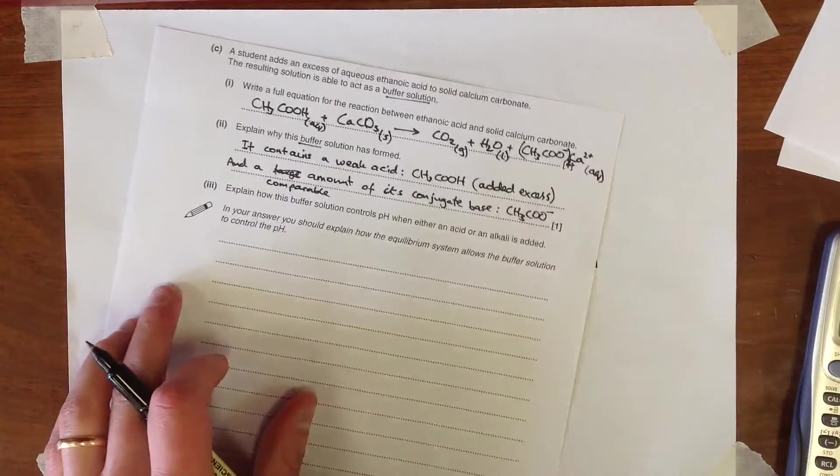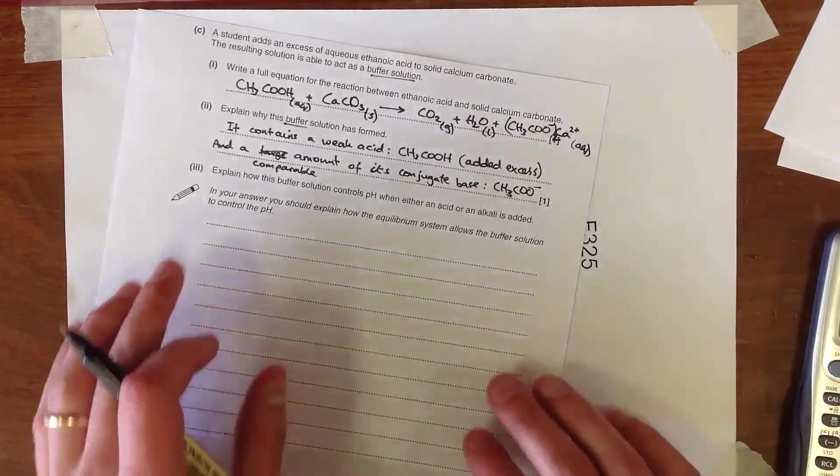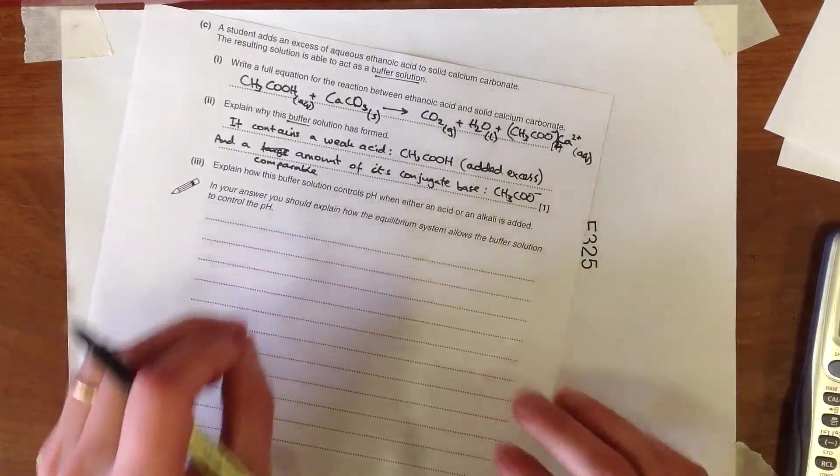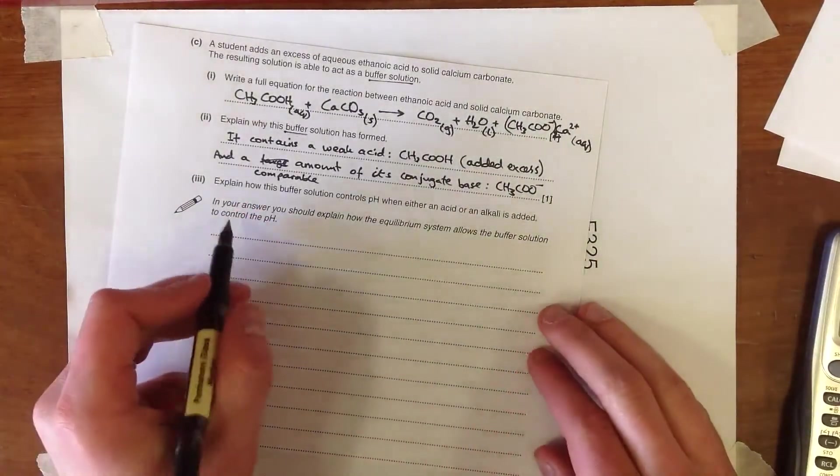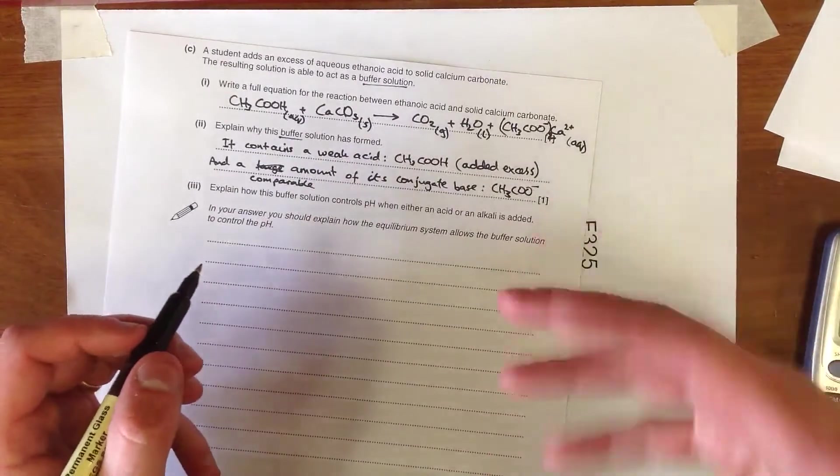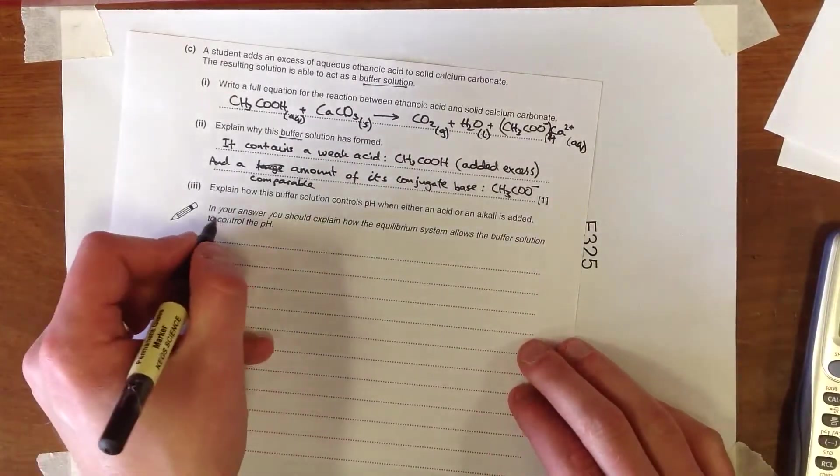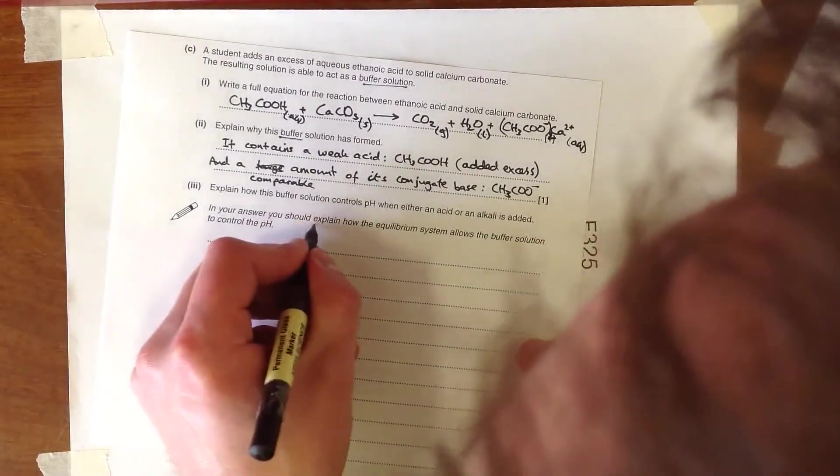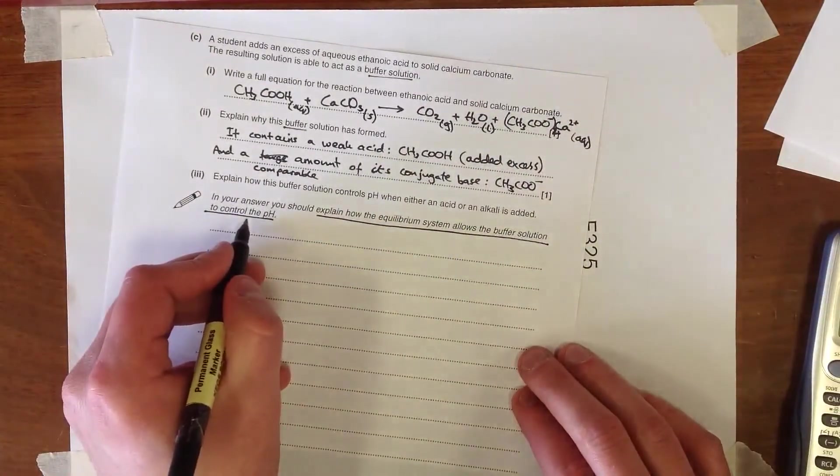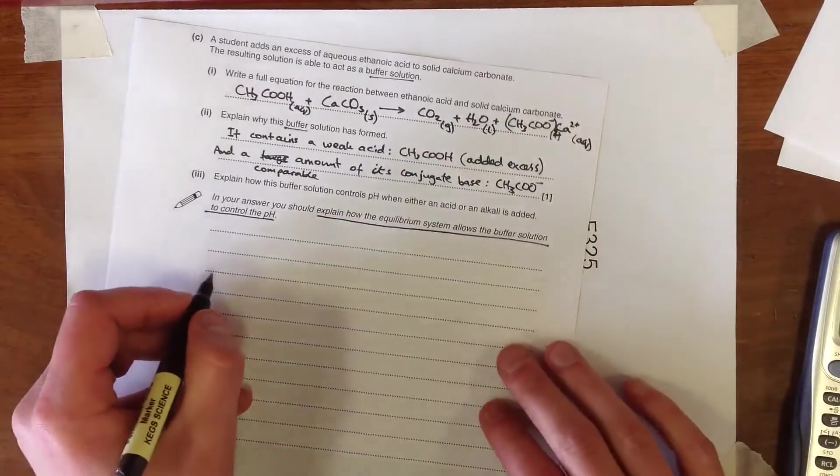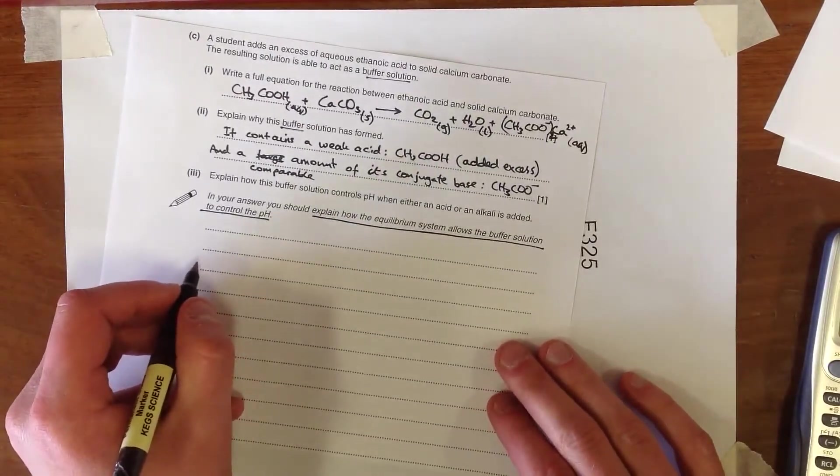Now we need to explain how this buffer controls pH. Now sometimes in these questions they ask you to define a buffer as well, but here we haven't been asked to do that, so we don't need to spend time writing about it. We just need to use that knowledge to answer the question. Now a key thing here, in your answer, is to explain how the equilibrium system allows the buffer solution to control the pH.